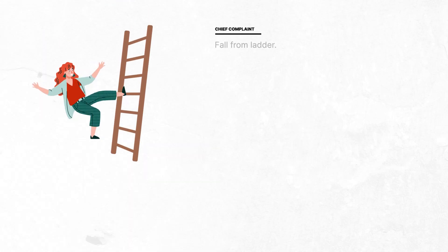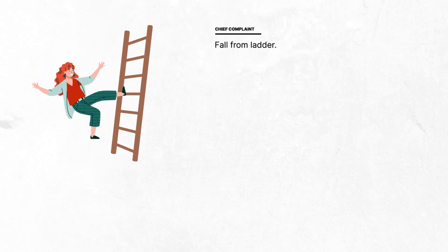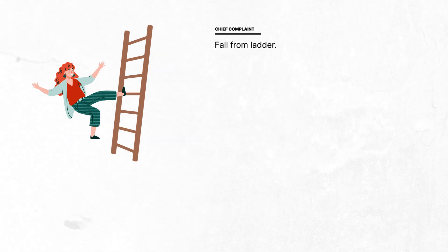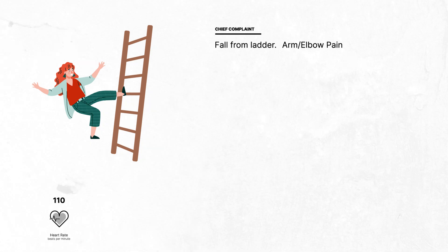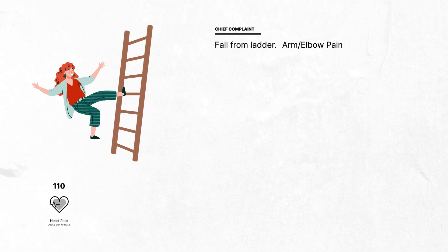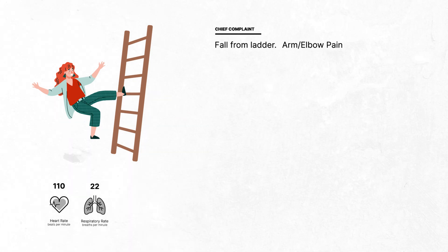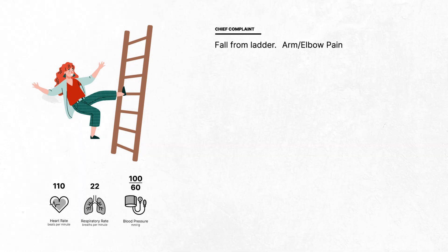A 35-year-old woman was brought to your clinic after falling from a ladder. She landed on an outstretched right hand and immediately reported intense pain in her right forearm and elbow. Her vital signs record a pulse of 110 per minute, respirations at 22, and blood pressure at 100 over 60.